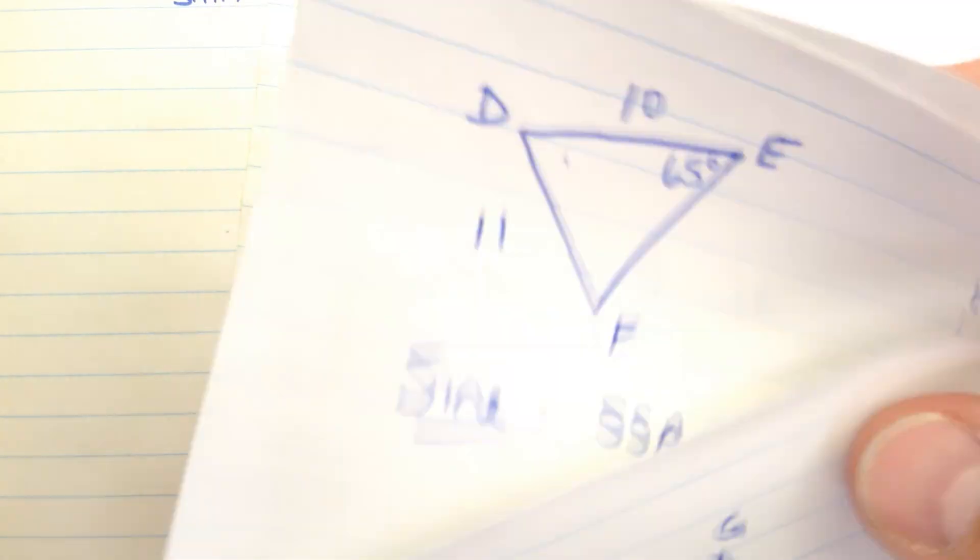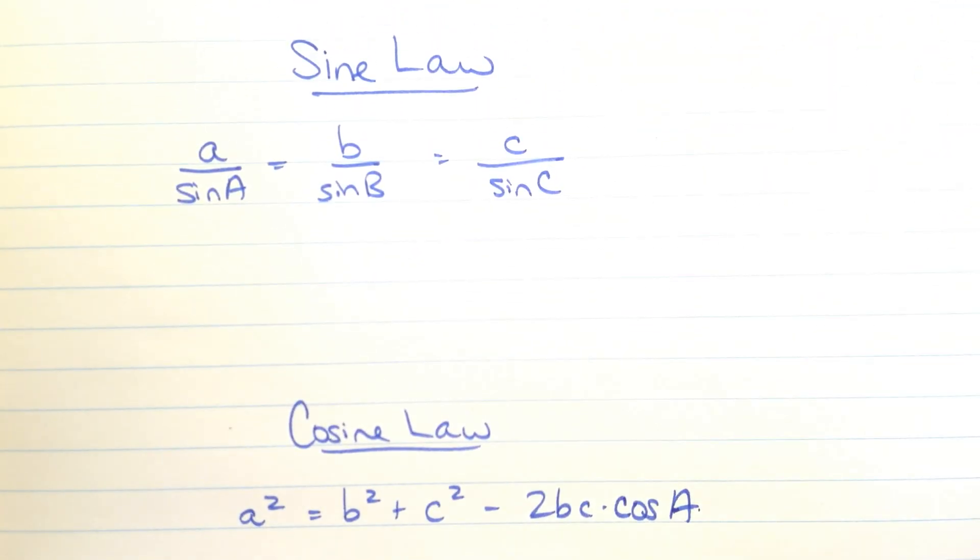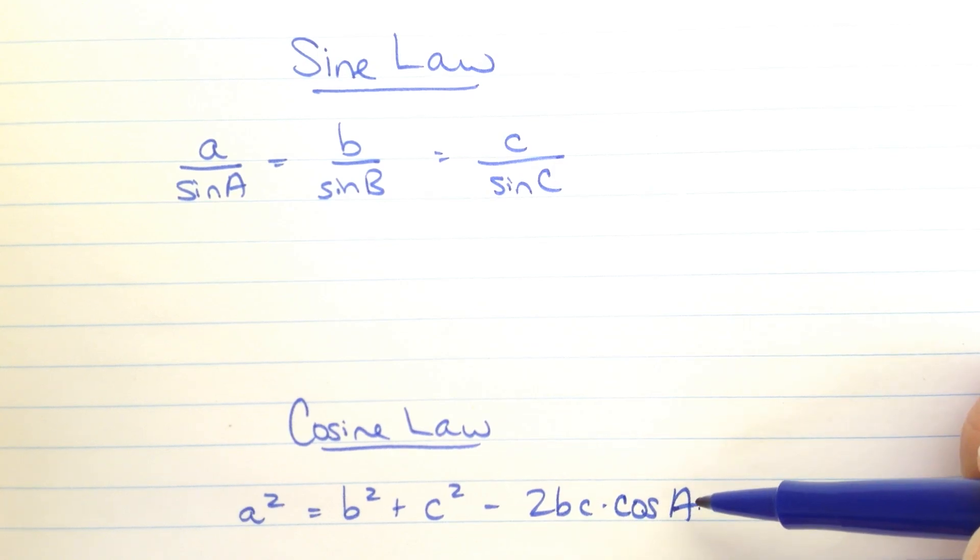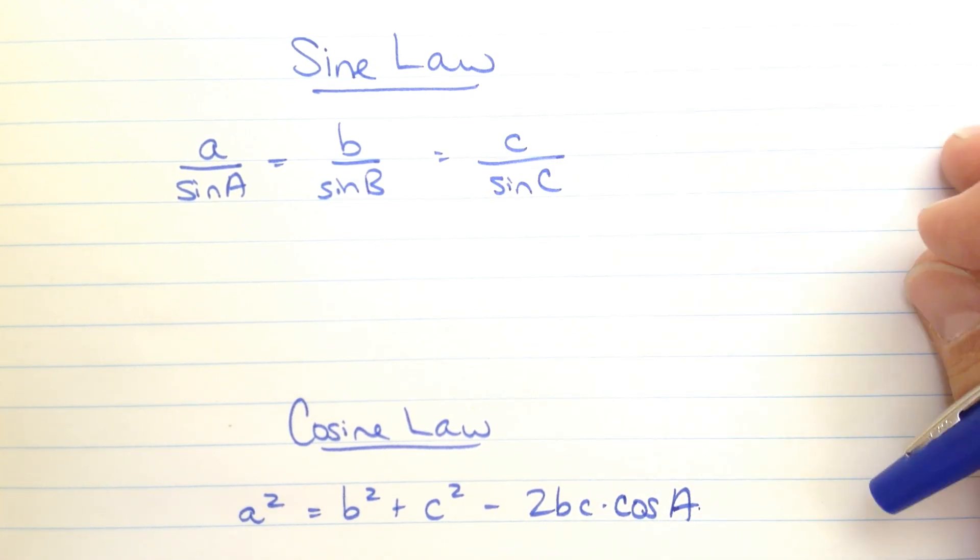So we've got four different situations that we can use here. Two of them give us sine law situations and two of them give us cosine law situations. So hopefully that helps to clear up what can happen. And once you've got a little bit of information, for example, if you use cosine law once, then you've got enough to go switch to the sine law and simplify your life. Thanks.